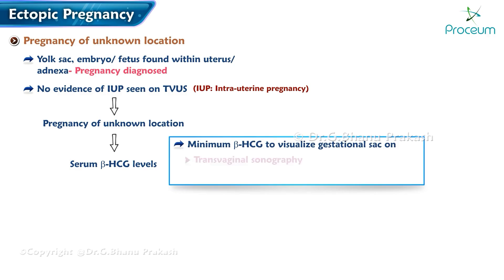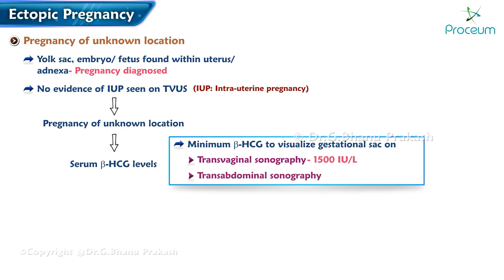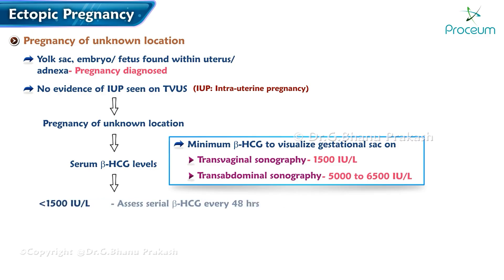The minimum beta-hCG to visualize a gestational sac on transvaginal sonography is 1,500 IU/L. The minimum beta-hCG to visualize a gestational sac on transabdominal sonography is 5,000 to 6,500 IU/L. If serum beta-hCG is less than 1,500 IU/L, assess serial beta-hCG every 48 hours.